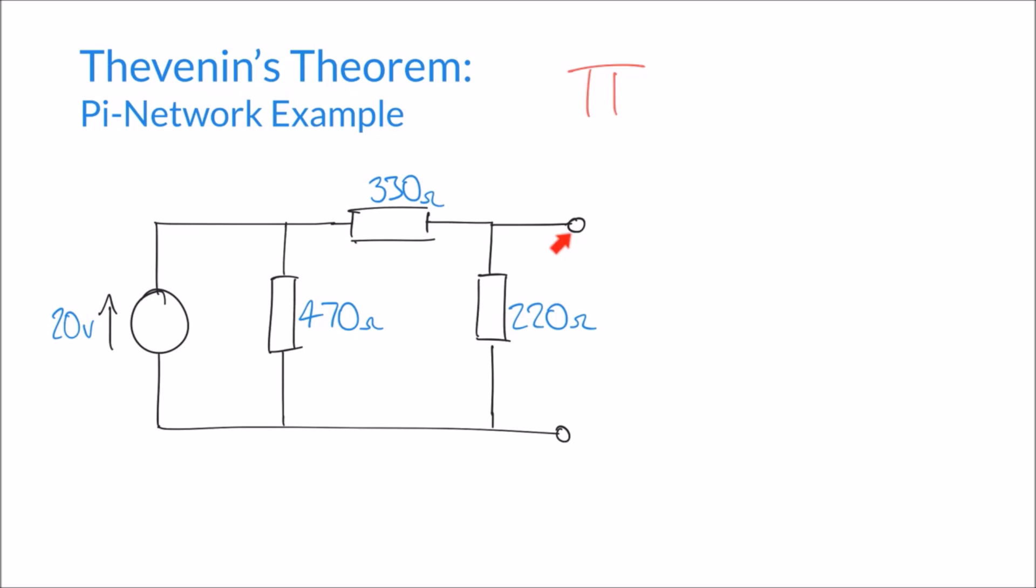In this case, we can see that we're essentially taking our voltage across the 220 ohm resistor. And so because we're measuring across this resistor here, this is the current loop that we are most concerned about in this particular circuit.